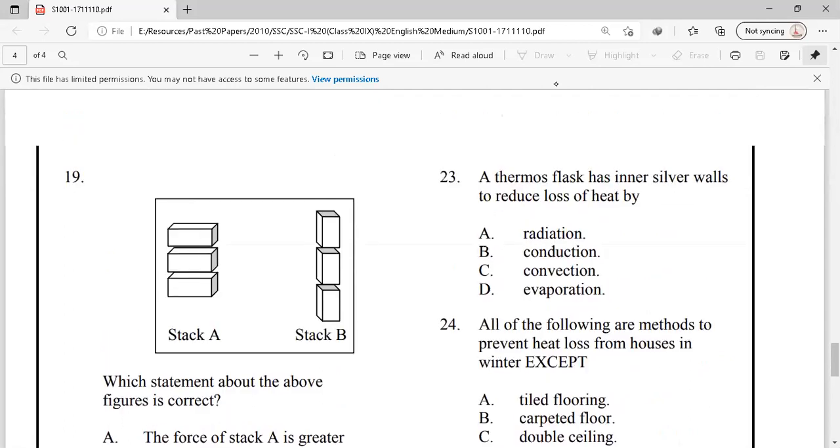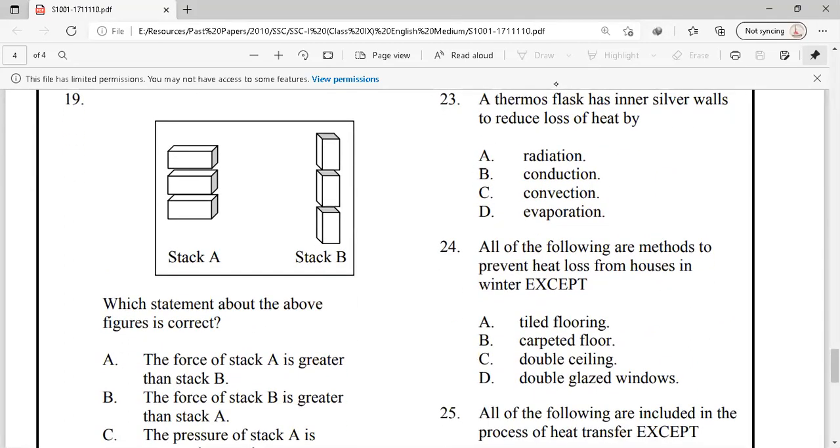Silver wall, because silver wall surface is shiny and smooth. Radiation strikes and vapors bounce back and radiation cannot move outside. Option A is the right answer. All of the following are methods to prevent heat loss from houses in winters except. Tiled flooring allows heat loss easily and tiles become cool in winters. Carpeted floors trap air and behave as an insulator.